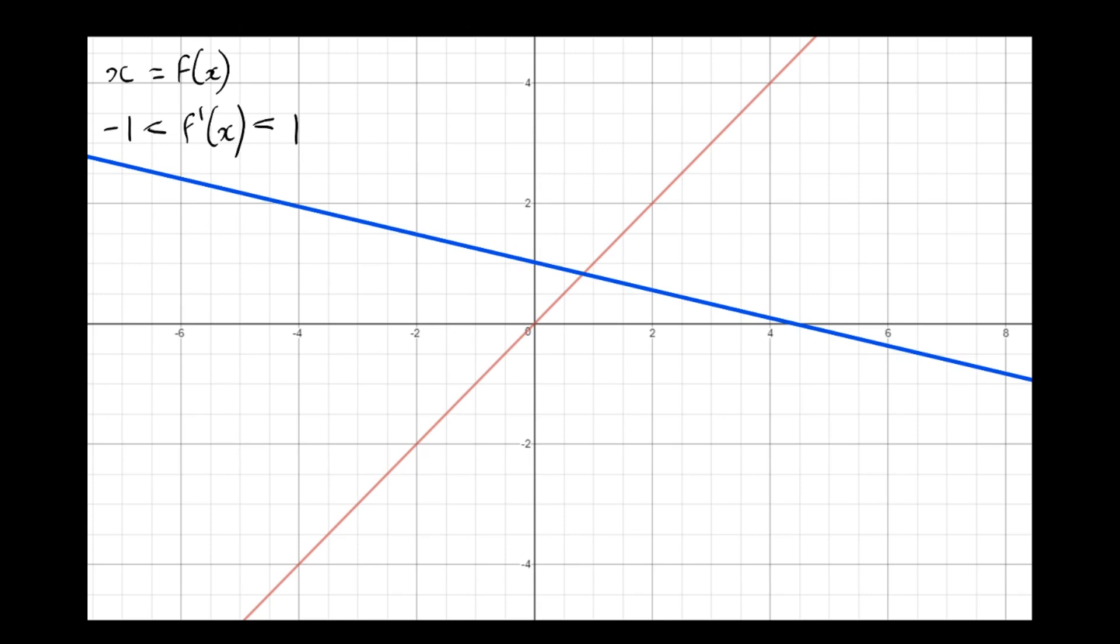So again, let's start iterating at x equals minus 4. So, up to f(x), along to y equals x, to f(x), to y equals x, to f(x), to y equals x. Now, we can see it's cobwebbing, if such a verb exists, to the point of intersection, which is there. So again, convergence is occurring.